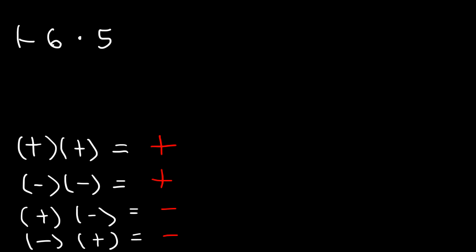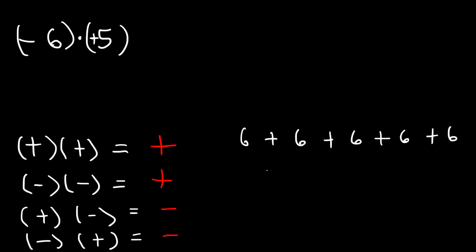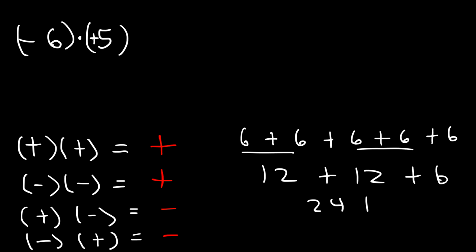So in this example, negative 6 times positive 5 — let's not worry about the sign first. What's 6 times 5? 6 plus 6 is 12, the next two sixes are also 12, 12 plus 12 is 24, and 24 plus 6 is 30. So 6 times 5 is 30. Now negative 6 times positive 5: the signs are opposite, so we get a negative answer — negative 30.